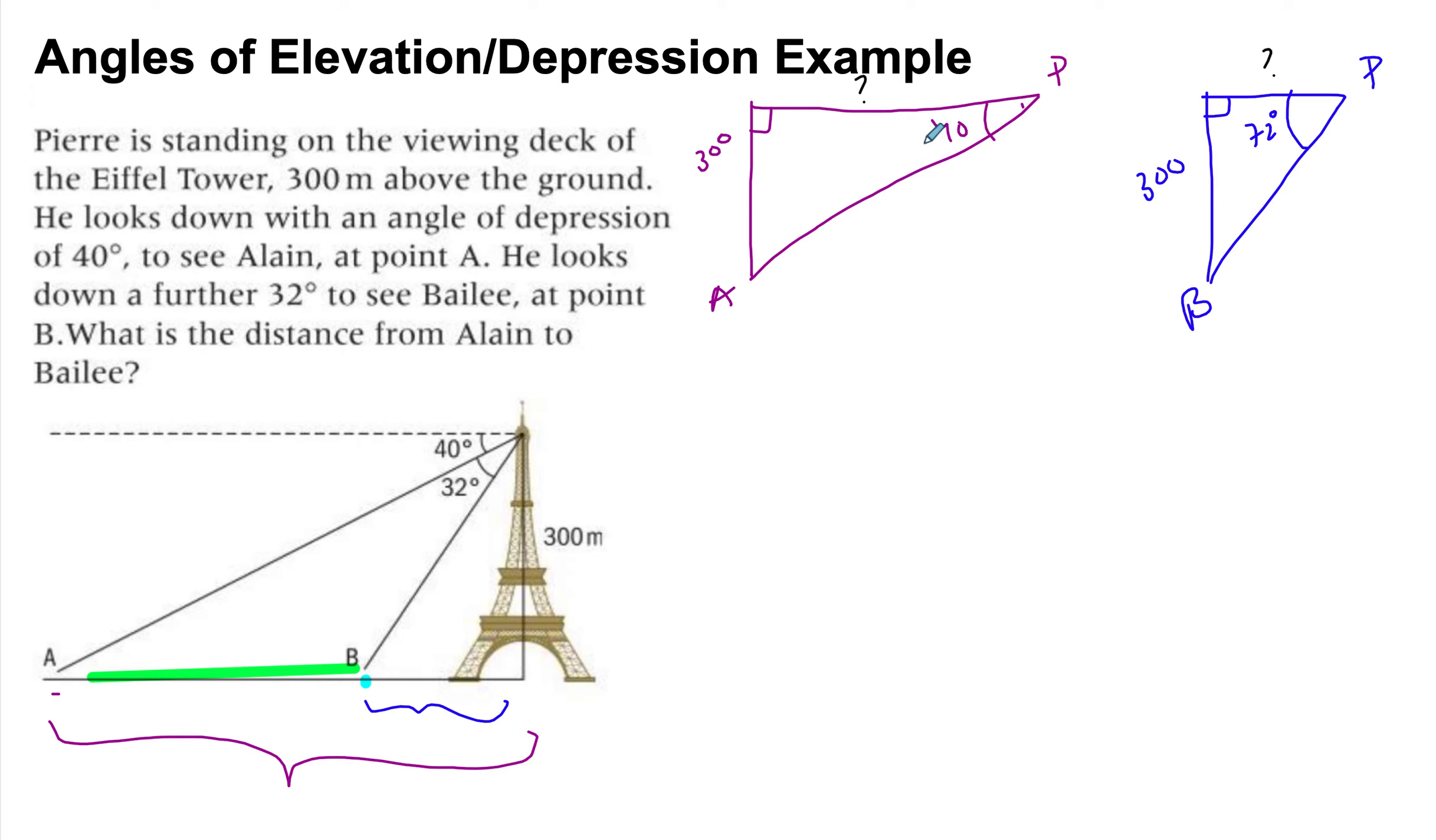And what I can do is use the trig ratio. So if I label all my triangles, this is going to be the opposite, adjacent, opposite, and adjacent.